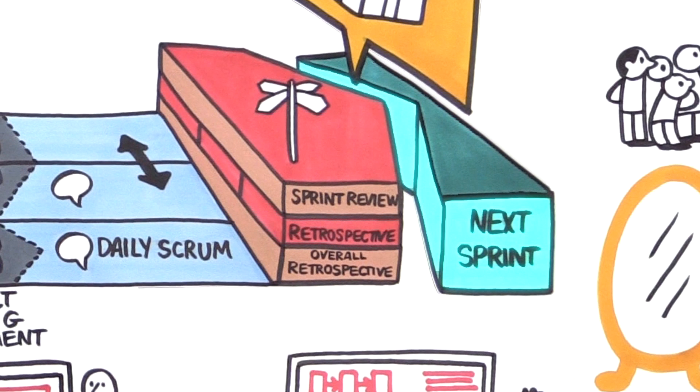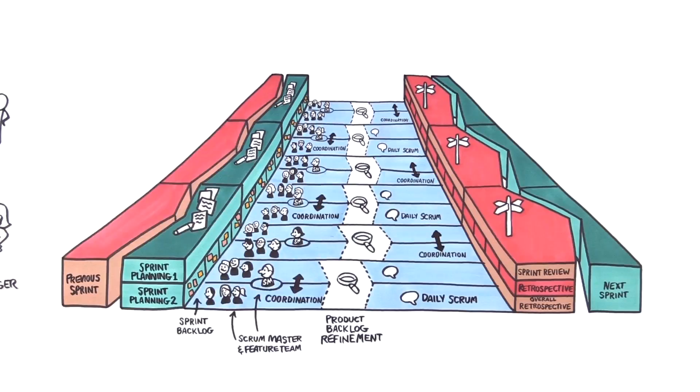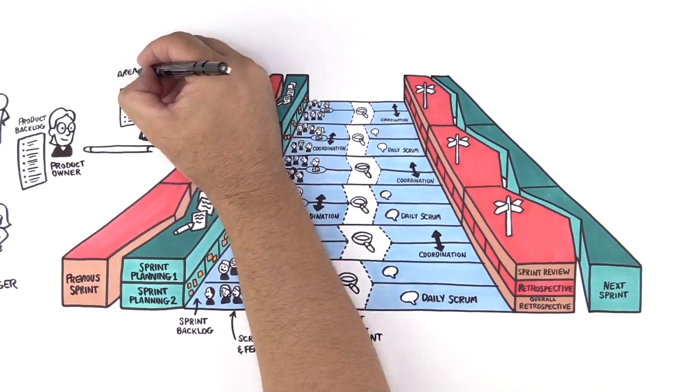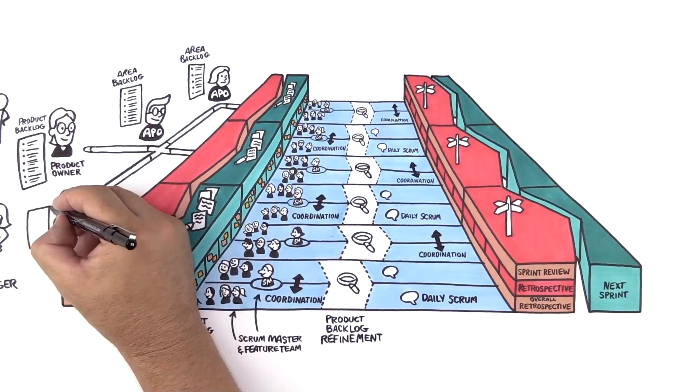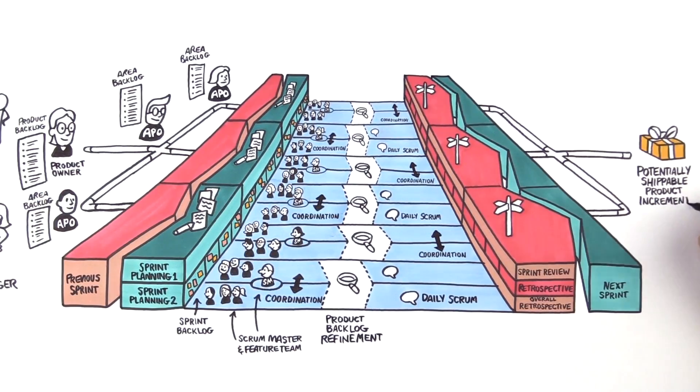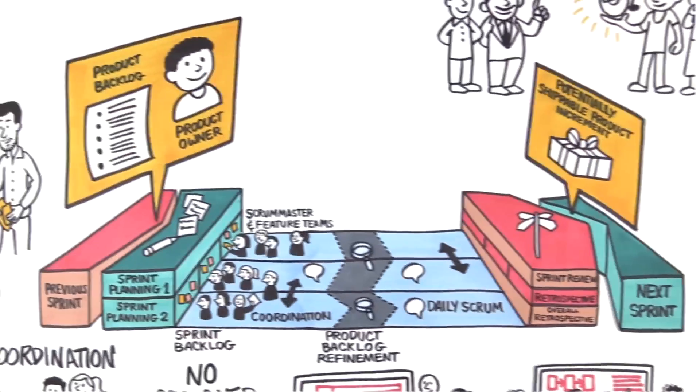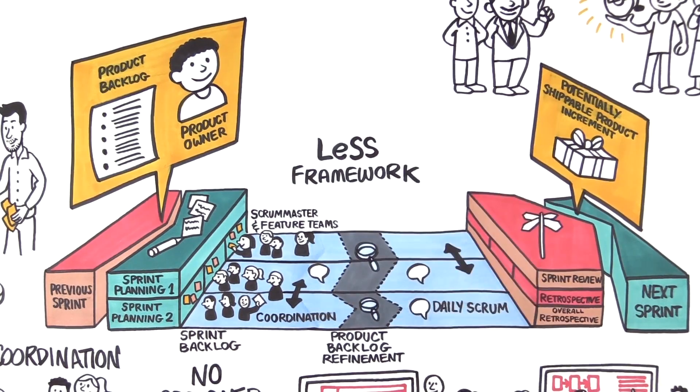Then they repeat the whole cycle, experimenting and making wiser mistakes each time. When we have more than eight teams, we do something similar called LeSS Huge, still targeting one shippable product every sprint. So that's the LeSS framework—just a few rules you can learn in a few minutes.